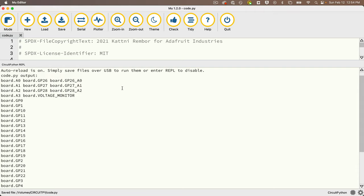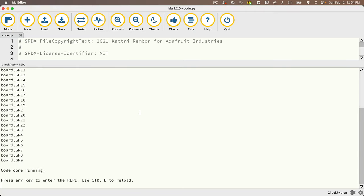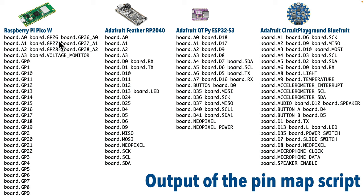To give you an idea of how output will vary, here is the output from this script compared across four different boards, including the Feather RP2040, the CutiePy ESP32S3, and the CircuitPlayground Bluefruit. You'll see more entries for boards that have more pins and built-in capabilities. Not surprisingly, the tiny CutiePy has the smallest output.